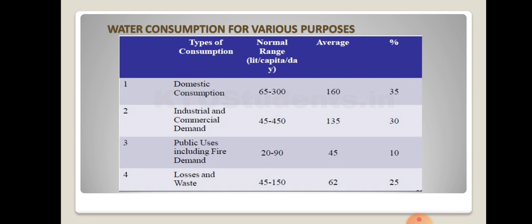This table indicates the types of consumption, the normal range in litres per capita per day, the average, and the percentage. Domestic consumption is usually 65 to 300 LPCD, with an average of 160, accounting for 35 percent. Industrial and commercial demand is 45 to 450 LPCD, with an average of 135, at 30 percent. Public uses including fire demand and losses and waste are also shown in the table.